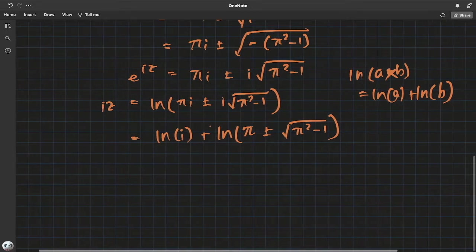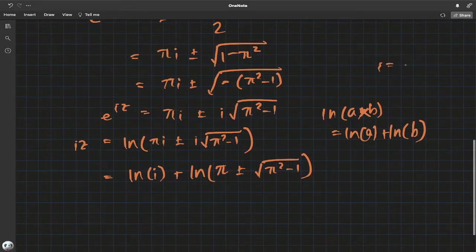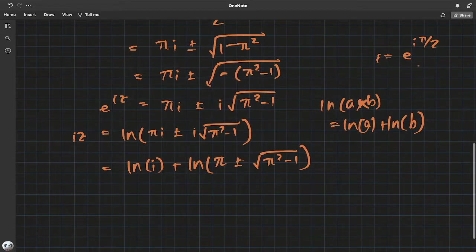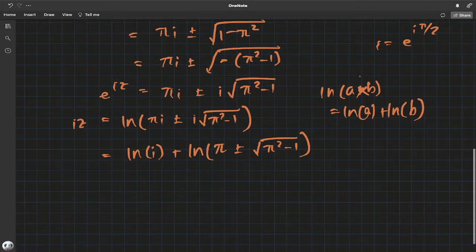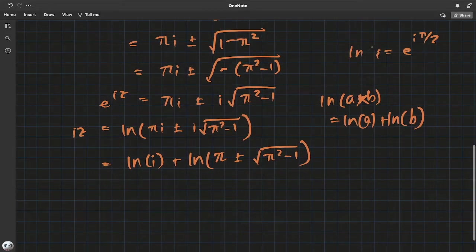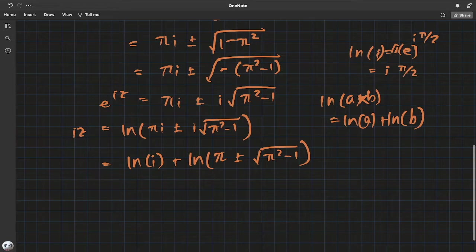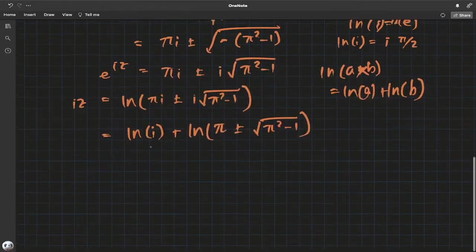Well, i can be represented as e^(iπ/2) using Euler's formula. This is just one value. Using the principal value of natural log we have this. So we take natural log on both sides, we have i times π/2. That's the natural log of i, so substitute that in.